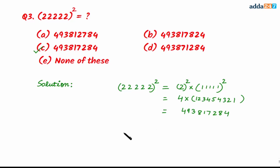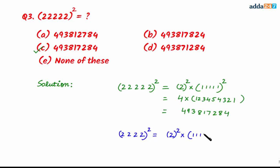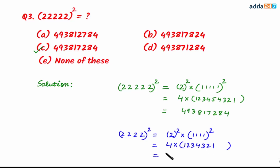For better understanding, let's take the example with four twos: 2222 squared. This equals 2 squared multiplied by 1111 squared, which is 4 multiplied by 1111 squared. Since we have four ones, we go 1-2-3-4-3-2-1, giving 1234321. Multiplied by 4, this gives the final answer.